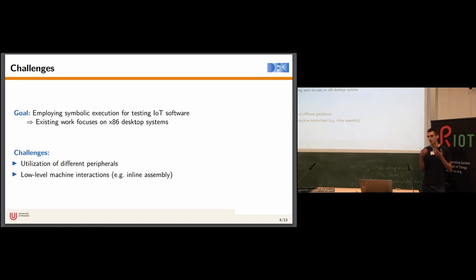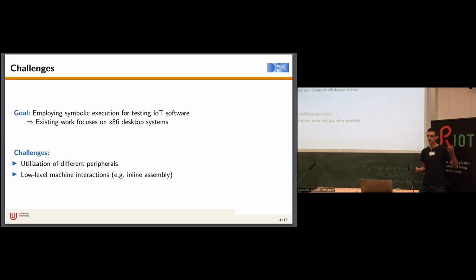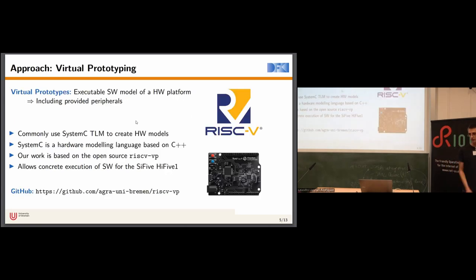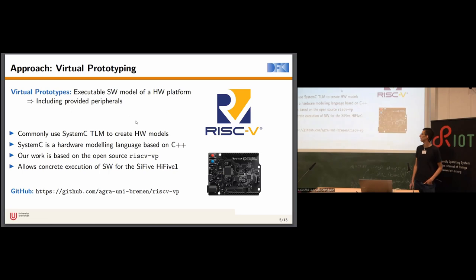If you operate at a higher abstraction level, like KLEE which executes LLVM IR, you're not able to execute code with inline assembly directly because you'd have to lift it to LLVM IR first. In order to address these challenges, we leverage a technique from prior work called virtual prototypes.